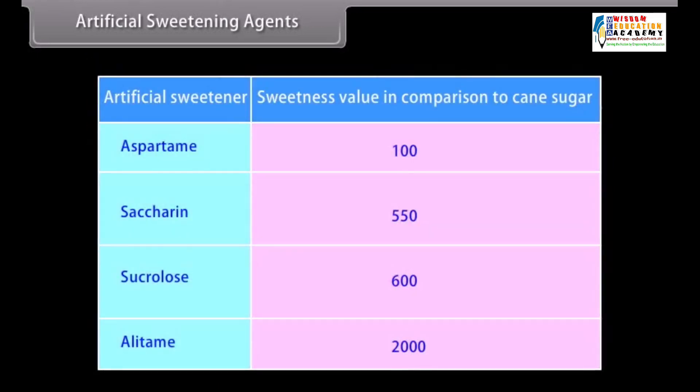Aspartame is 100 times sweeter than cane sugar. Saccharin is 550 times sweeter than cane sugar. Sucralose is 600 times sweeter than cane sugar. Alitame is 2000 times sweeter than cane sugar.